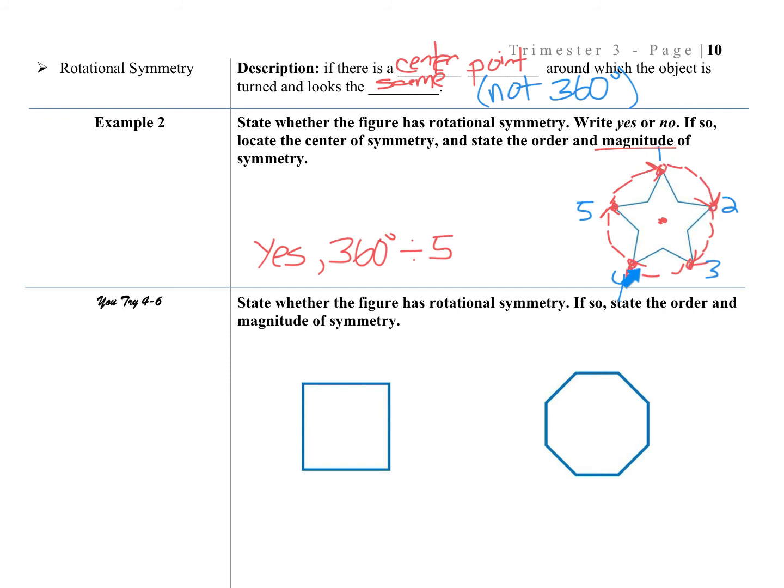We had one turn, two turns, three and four, and then back to itself is five turns. So therefore, we can divide by five, which will give us a 72 degree magnitude for this. So that's what the magnitude is. And yes is the answer for rotational symmetry.